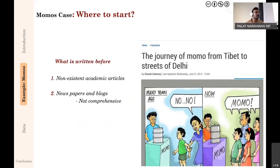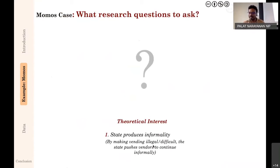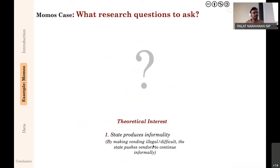I searched online and did not find many academic articles on the topic — there were lots of newspaper blogs, but they were not very comprehensive. So I had to create my own data. Given my interests, I asked two research questions: how does urban planning operate with respect to street vending practices, and how do street vendors operate in the city — how much income do they make, is it a stable job, or a placeholder for something in the future?